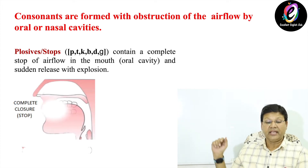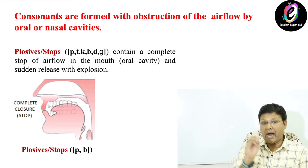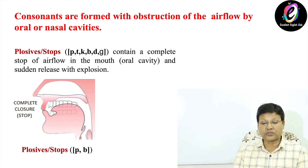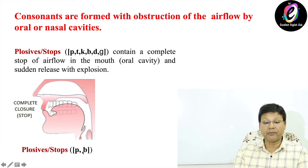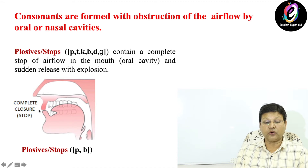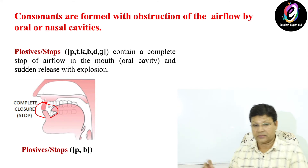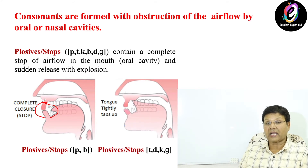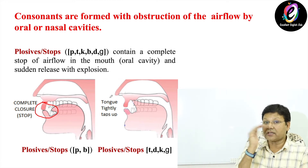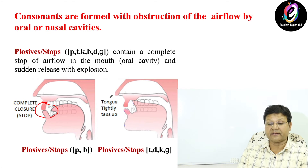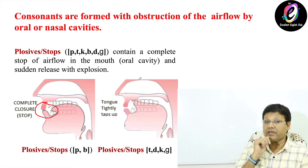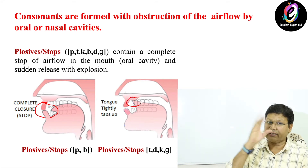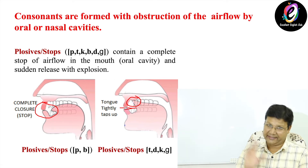In the picture you can see: for pa and ba, there is a complete closure of the lips. But for ta, da, ka, ga, we don't use lips — we use the tongue and the alveolar ridge. The tongue stops the air at the top and then there is a sudden release: ta, da, ka, ga. In the picture you can see that the lips are apart and the tongue is used to stop the airflow.